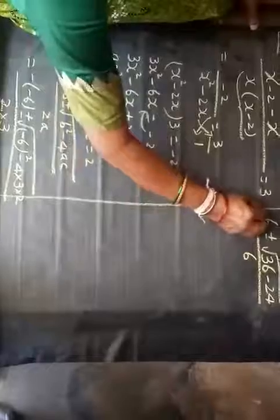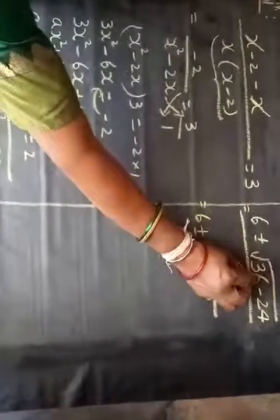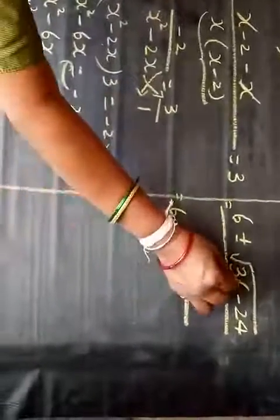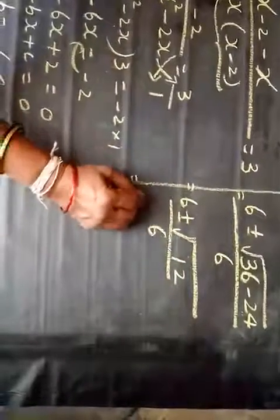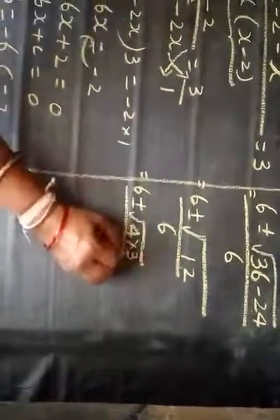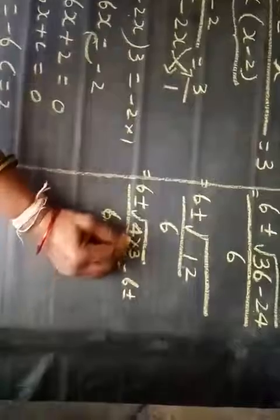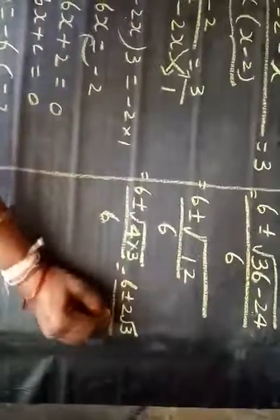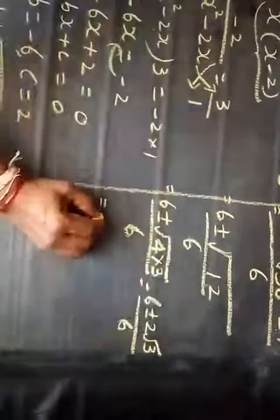Next step: 6 plus or minus under the square root. Don't just take root of 36 as 6 — we have to subtract first and then take the square root. 36 minus 24 gives 12, divided by 6. Now 12 can be written as 4 into 3, so 6 plus or minus root of (4 into 3) divided by 6. Square root of 4 comes out as 2, leaving root 3 inside, divided by 6.